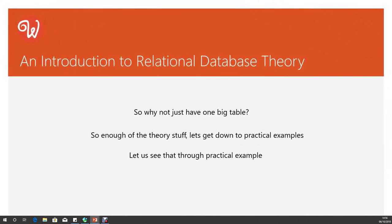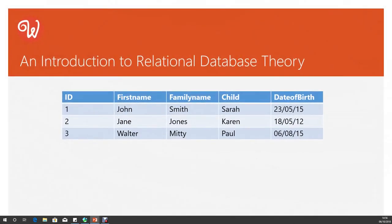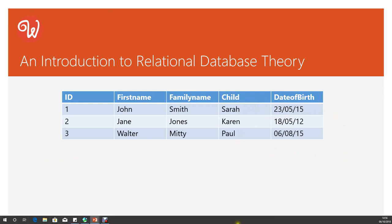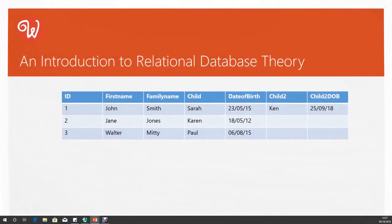So why not just have one big table? Let's look at some practical examples to see why we use relational databases. We start with a fairly basic example: we have a table with three people — three parents: John Smith, Jane Jones, and Walter Mitney — and each one has a child: Sarah, Karen, and Paul. Codd's rules require that every record should have a unique identity, so we have a unique ID for each, generally referred to as a key field. We store the child's name and date of birth, and at that stage it seems to work quite effectively. Unfortunately, people tend not to stop at one child — in this case John Smith has also had a second child called Ken.